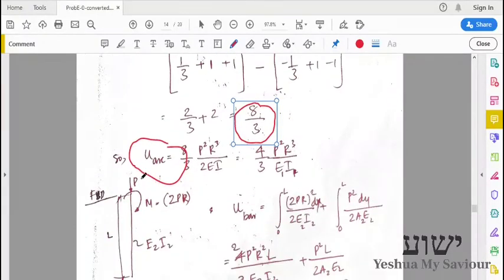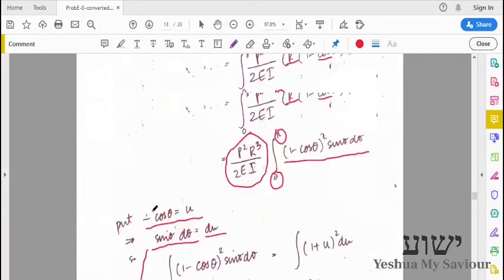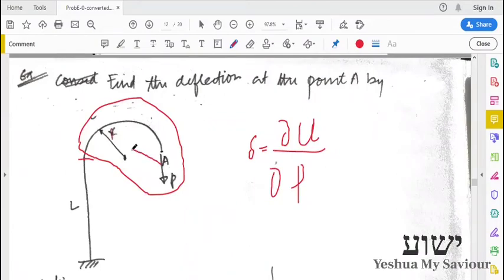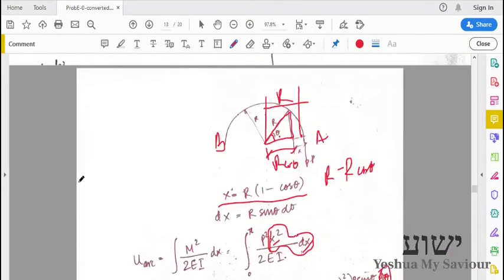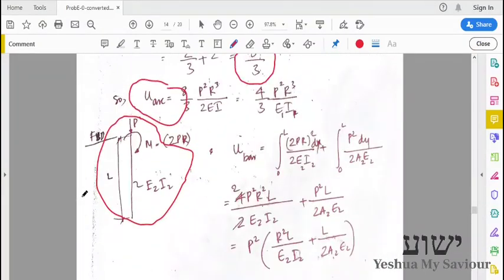So next is, we consider the strain energy integral of this beam or this rod. Obviously, if we shift this load to this point, we have a moment and axial load.